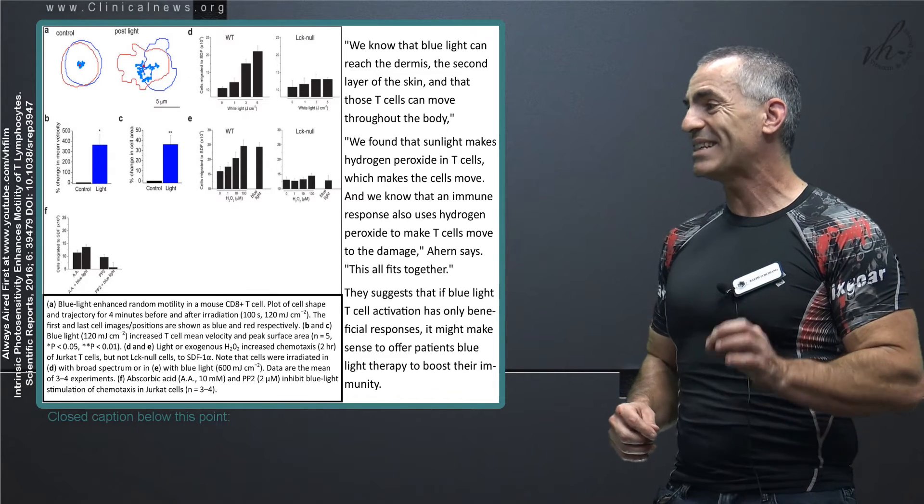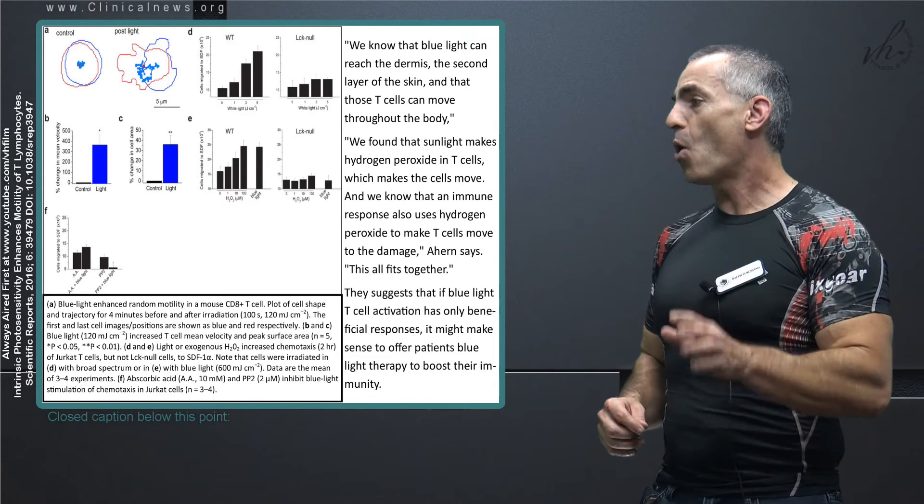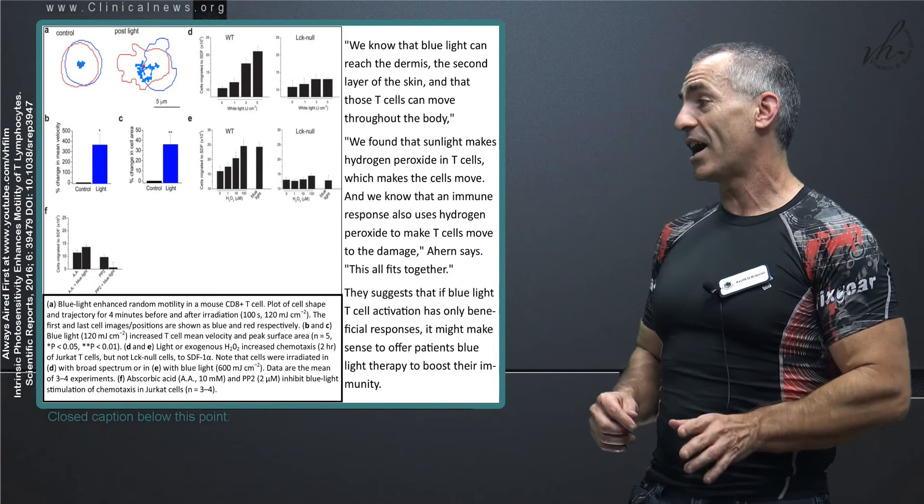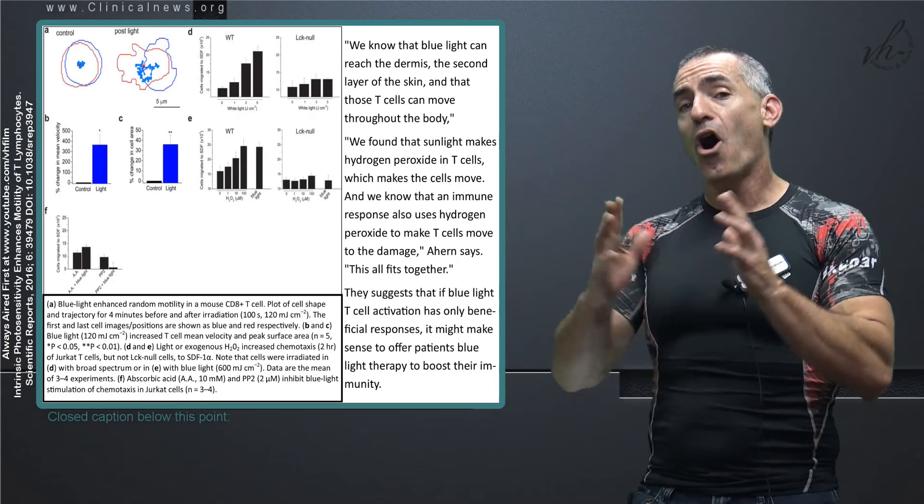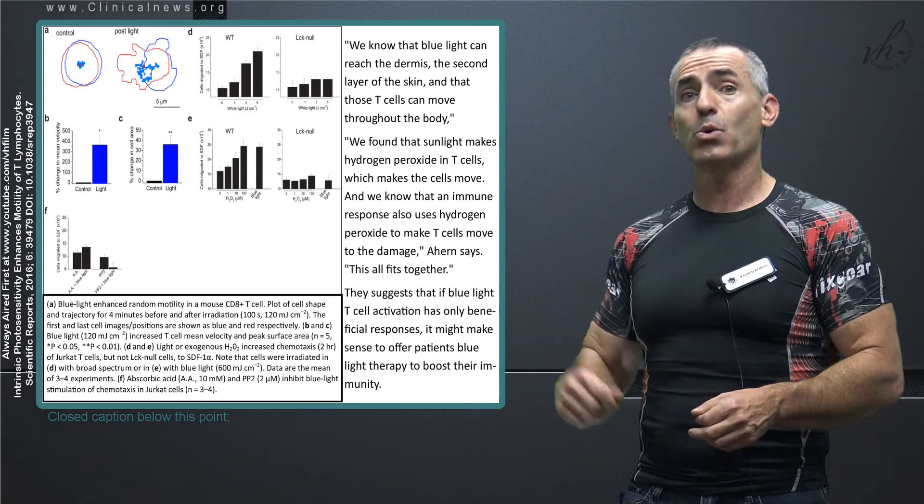Just the same, we found that sunlight, this is interesting too, sunlight makes hydrogen peroxide in T cells which make the cells move. And we know that an immune response also uses hydrogen peroxide to make T cells move to the damaged area. It all fits together, quote unquote, from the researchers itself.